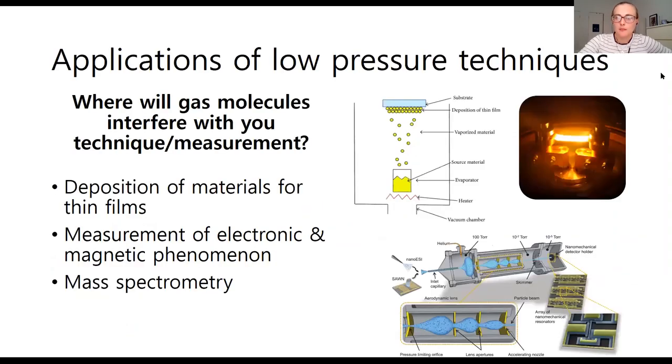Working at low pressure is a common concern in many experimental techniques and I think of where will gas molecules interfere with your measurement or your technique because working at low pressure means there's less molecules there. If you think of PV equals NRT from your chemistry classes, reducing the pressure reduces the number of molecules present.